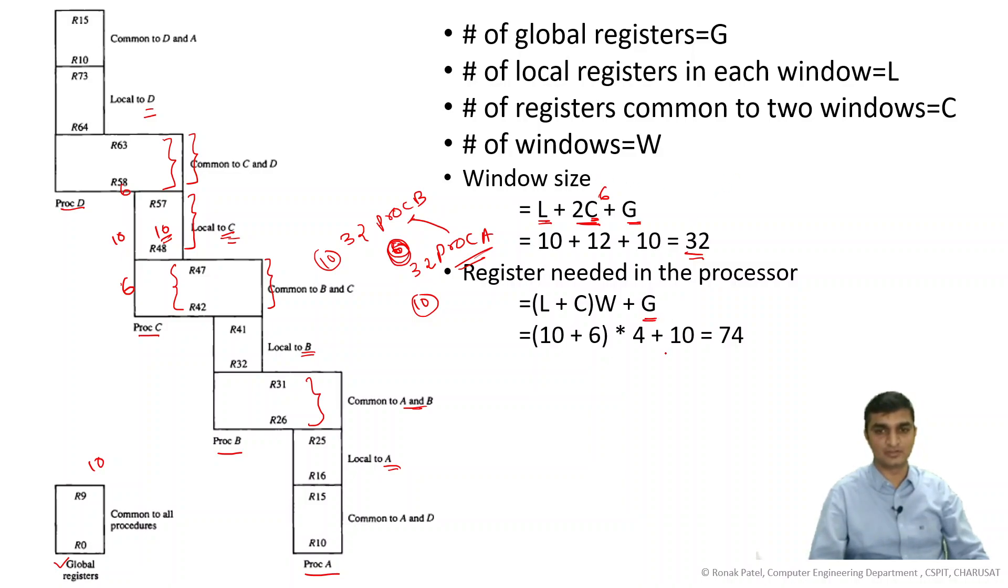So global register is 10. How many windows do you have? You can see we have four windows, so we want to allow this much. And for each we have 10 local and one adjacent. We have two adjacent, but if you consider one process, then this is circular fashion, so you can consider this C. So 74 registers we have in this total.